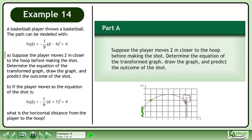In Part A, suppose the player moves 2 meters closer to the hoop before making the shot. Determine the equation of the transformed graph, draw the graph, and predict the outcome of the shot.